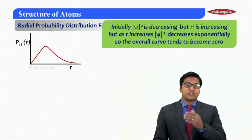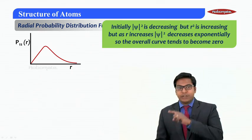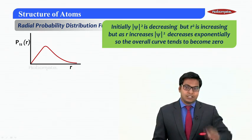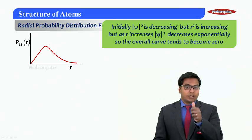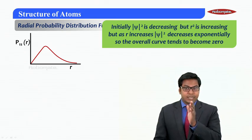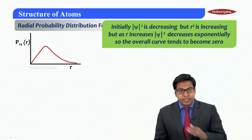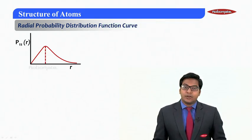But as r is increasing, ψ² is decreasing exponentially. So initially it will increase because of r², and then it decreases because of ψ². So r² is contributing first in the first half of the graph and ψ² is contributing in the second half, and eventually it tends to become zero.